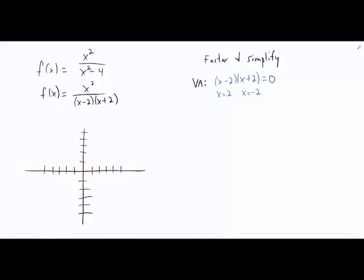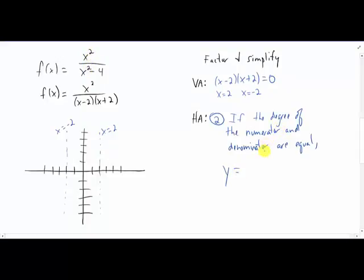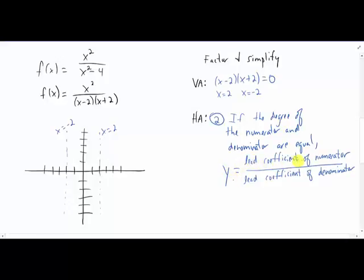Now remember rule one for horizontal asymptotes where it said if the degree of the denominator is bigger than the degree of the numerator? Well that's not the case here. The degrees of our numerator and denominator are equal. If the degree of the numerator and the denominator are equal, we do have a horizontal asymptote, and the horizontal asymptote will be y equals the leading coefficient of the numerator divided by the leading coefficient of the denominator. The leading coefficient of the numerator is one, and the leading coefficient of the denominator is also one. So we have y equals one over one, or just a horizontal asymptote of y equals one.